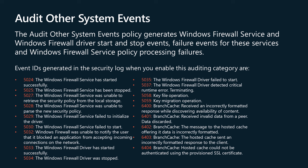6400: Branch Cache received an incorrectly formatted response while discovering availability of content. 6401: Branch Cache received invalid data from a peer — data discarded. 6402: Branch Cache — the message to the hosted cache offering it data is incorrectly formatted. 6403: Branch Cache — the hosted cache sent an incorrectly formatted response to the client. 6404: Branch Cache — hosted cache could not be authenticated using the provisioned SSL certificate.